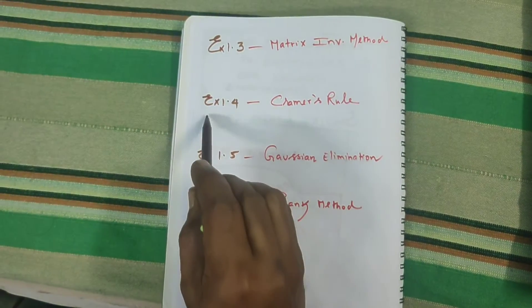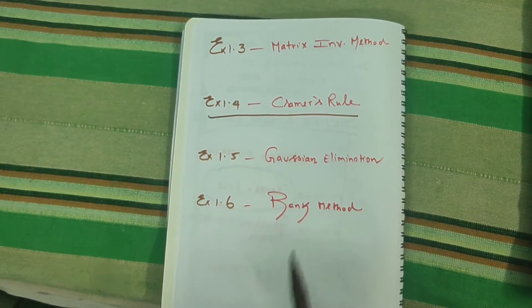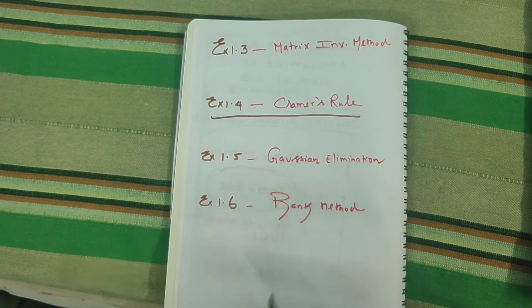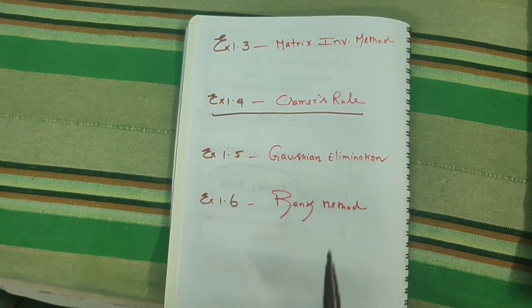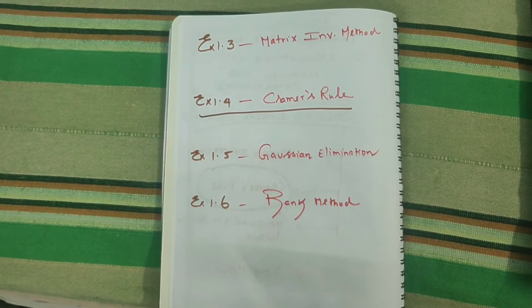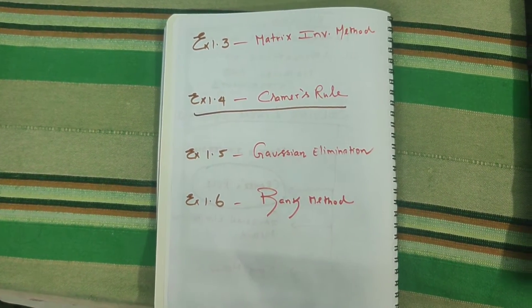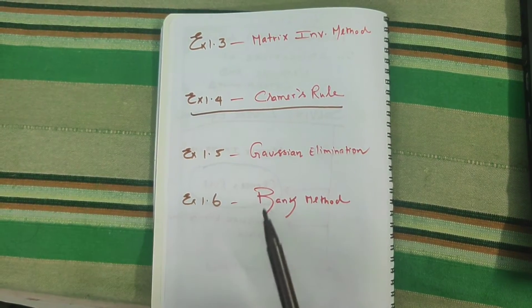Today I am going to deal with Exercise number 1.4, Cramer's rule. If you need the model sum or concept, that exercise is full of examples, and this model is much better and easier to use.